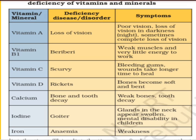Vitamin D is well known for being obtained from sunlight. When children do not play outdoors in sunlight, they tend to become deficient in vitamin D. This causes rickets, in which children's bones become soft and tend to bend.